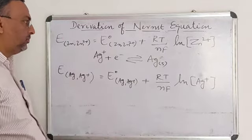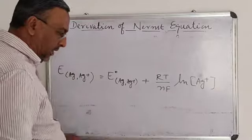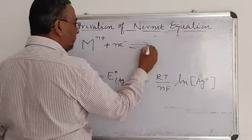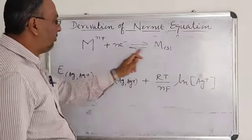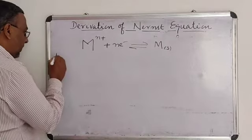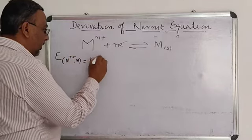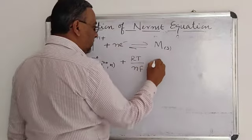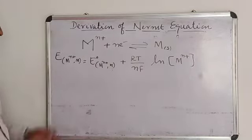Writing a general equation for any metal: for a general metal M, depending on its valency, it takes up N electrons and is reduced to metal M. In this case, the equation is: E = E°(M^n+/M) plus RT/NF into ln of concentration of M^n+. This is the general expression applicable to any metal electrode.